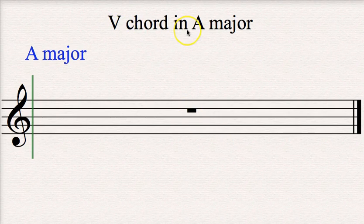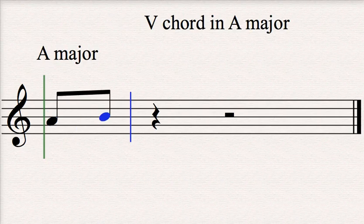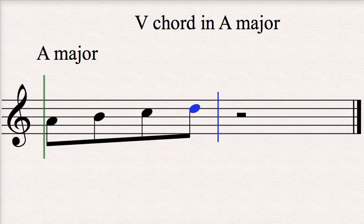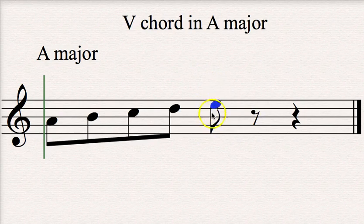So the V chord is going to be the same as the note based off scale degree V. So if you think about an A major scale, scale degree V, 1, 2, 3, 4, 5, is going to be based on E.